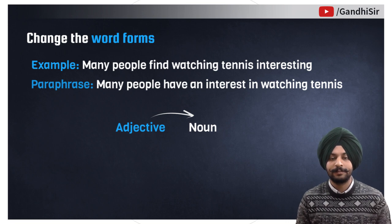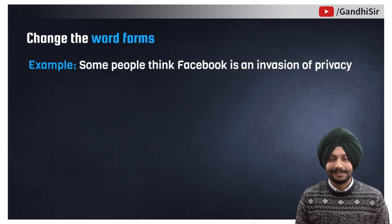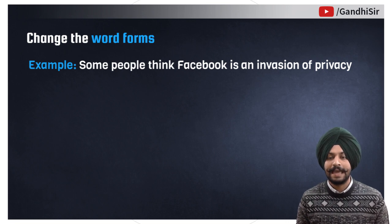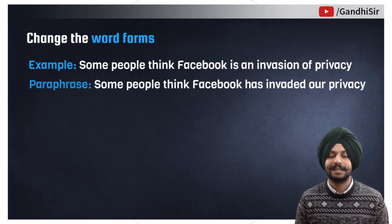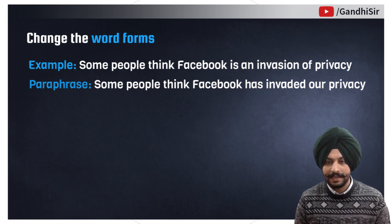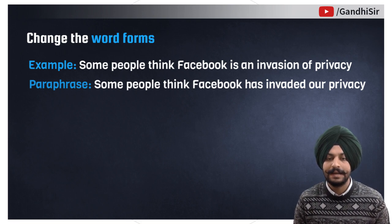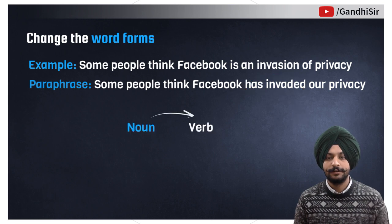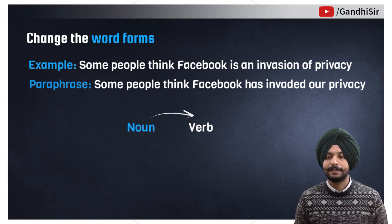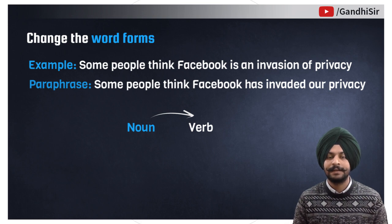One more example: 'Some people think Facebook is an invasion of privacy.' Here 'invasion' is a noun. We paraphrase it as: 'Some people think Facebook has invaded our privacy.' Here 'has invaded' is a verb. So we have changed the noun into a verb. This is the way of paraphrasing by changing word forms — changing nouns into adjectives, adjectives into nouns, verbs into nouns, and so on.